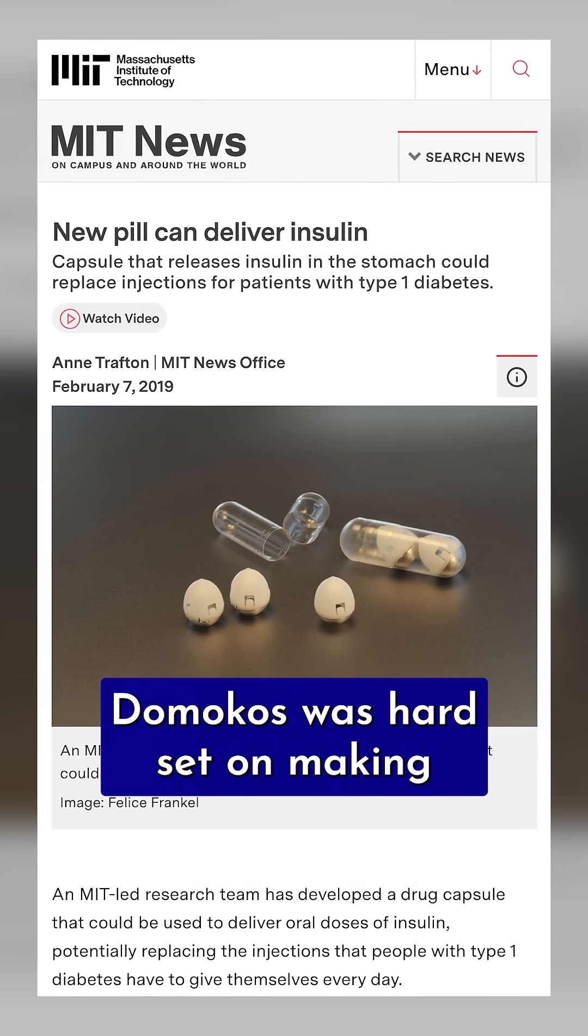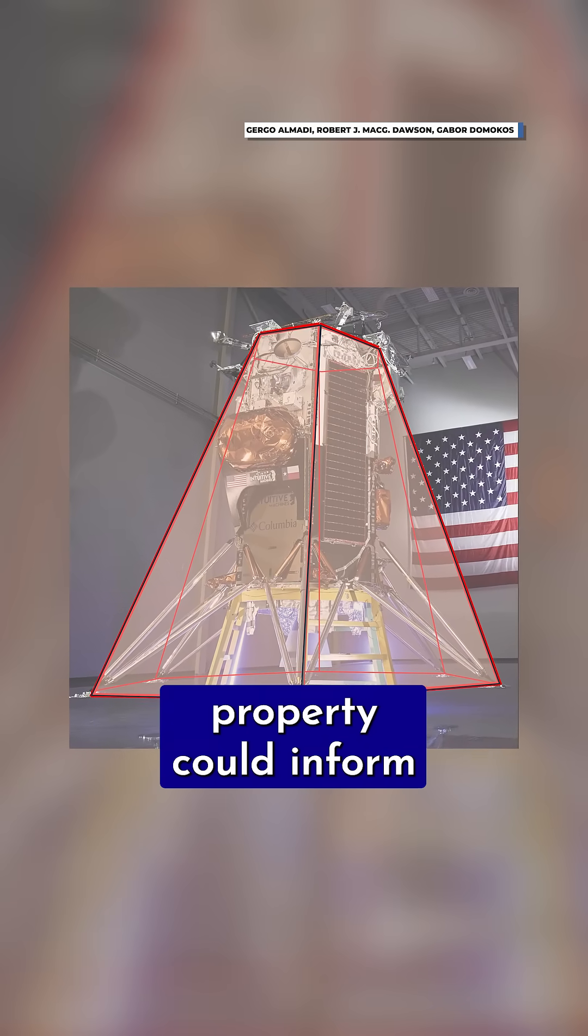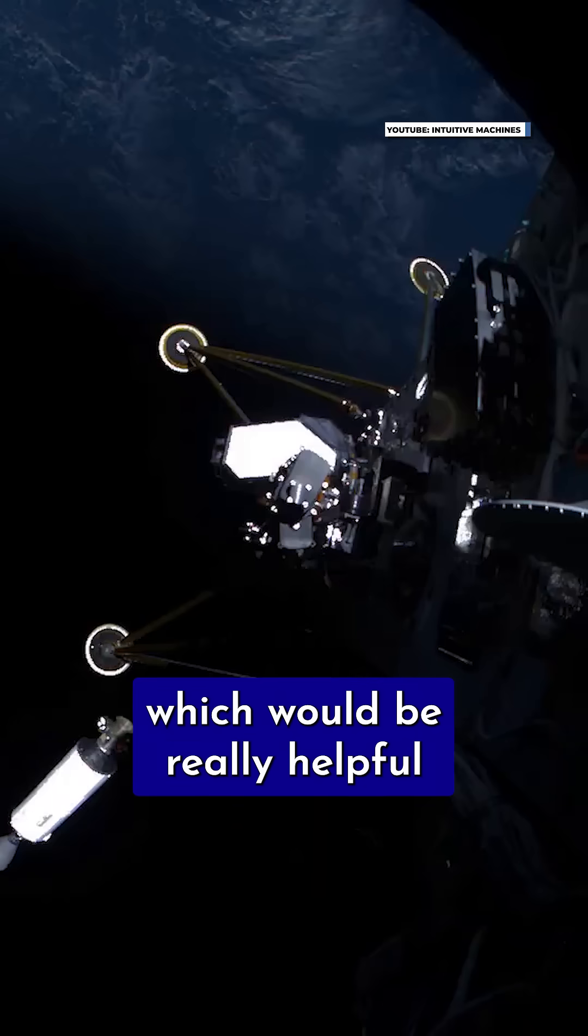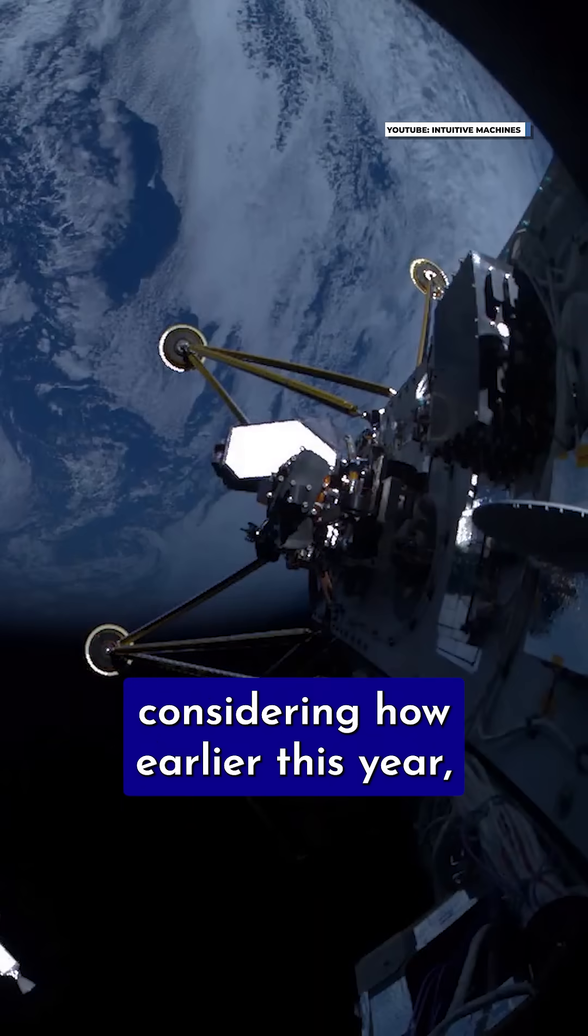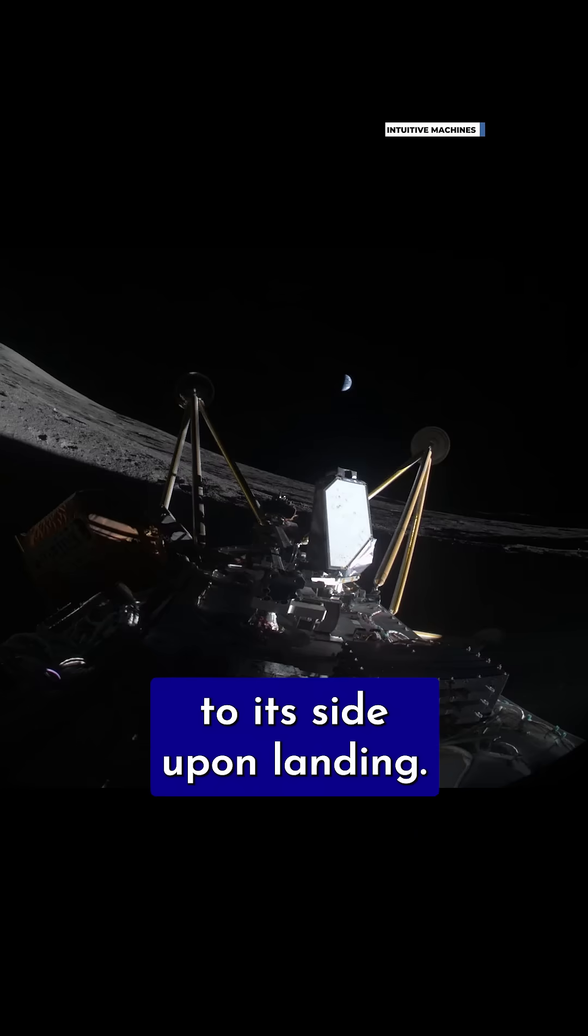That's why Dimokos was hard-set on making a physical version of belay. For instance, belay's self-righting property could inform aerospace engineers wanting to develop self-righting lunar landers, which would be really helpful considering how earlier this year, two big moon missions met a premature end when the lander toppled to its side upon landing.